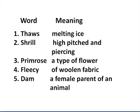Now, students, you have to learn their meanings also, so you would be able to understand the poem clearly. The first word is 'thaws,' which means melting ice. 'Shrill' means high-pitched and piercing. 'Primrose' is a type of flower. 'Fleecy' means of woolen fabric.